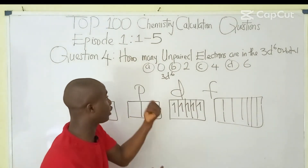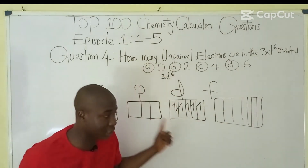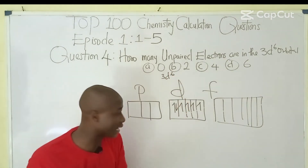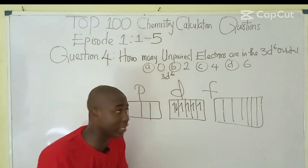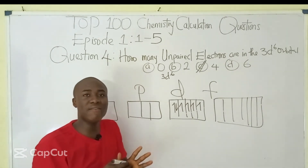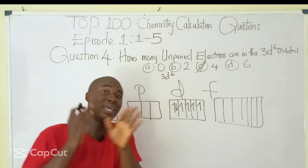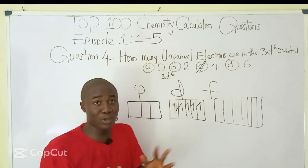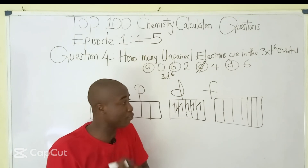After filling all 5 boxes singly, one electron remains and pairs with the first box. So the 6 electrons are distributed as: one paired box and four singly occupied boxes. Counting the unpaired electrons, we have 4 unpaired electrons — the answer is option C. Whenever an atom has unpaired electrons, that atom is said to be paramagnetic.